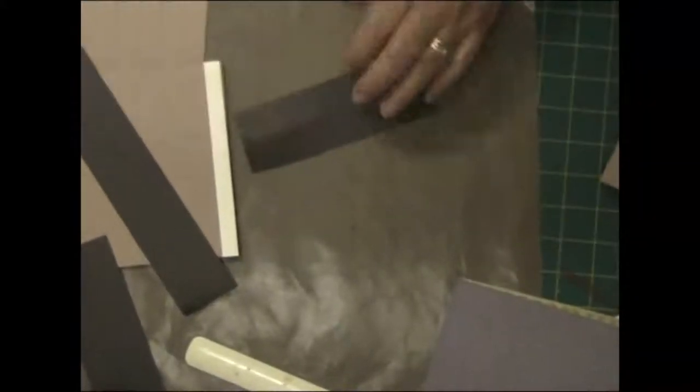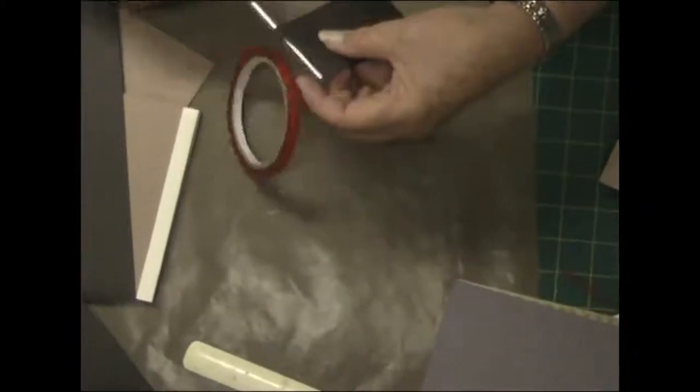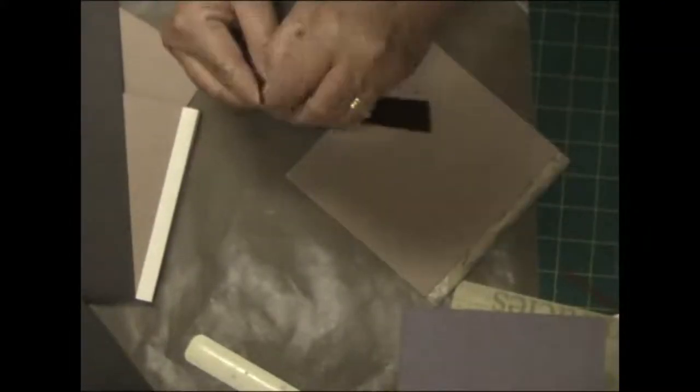And this is just a piece of heavy cardstock that I'm using to join another two sections of the pages together, but still using the red tacky tape.